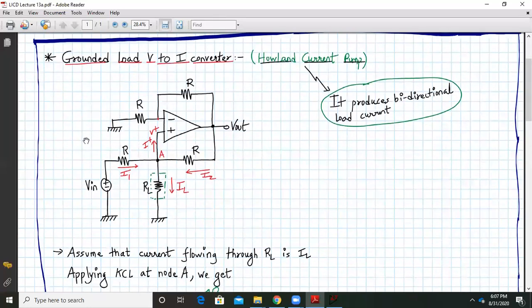This is my schematic, the circuit diagram for grounded load voltage to current converter. It is also called as Howland current pump, named after its inventor. It produces a bi-directional load current, that's the advantage.